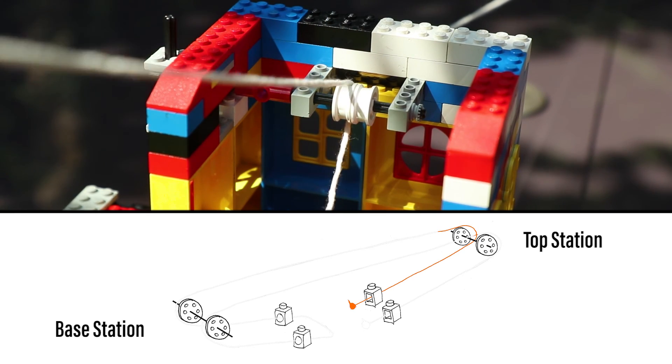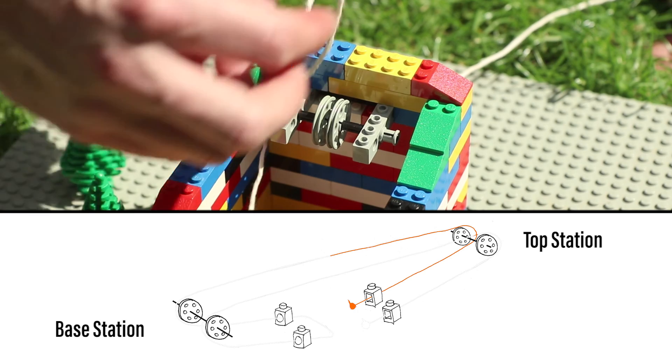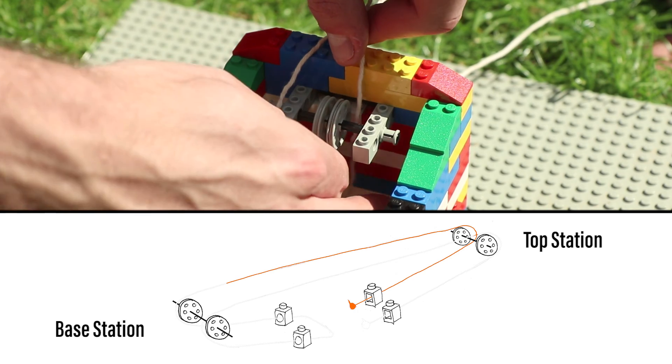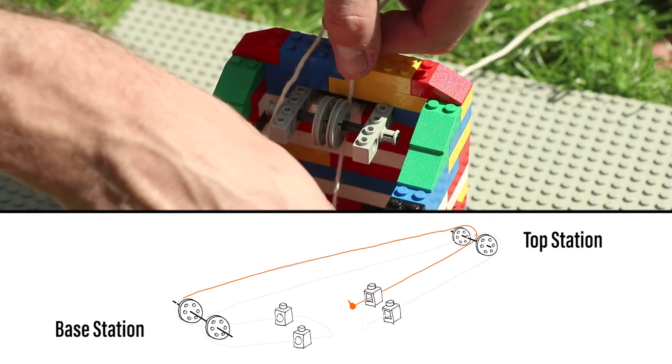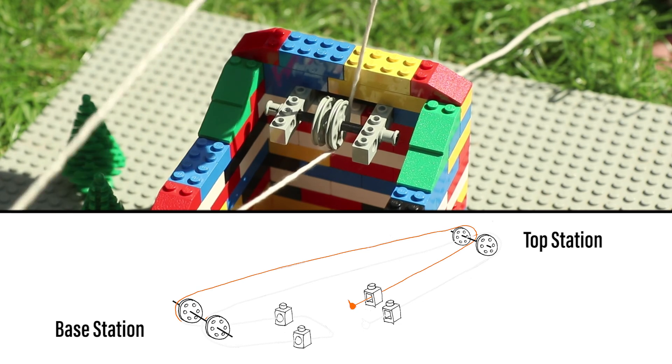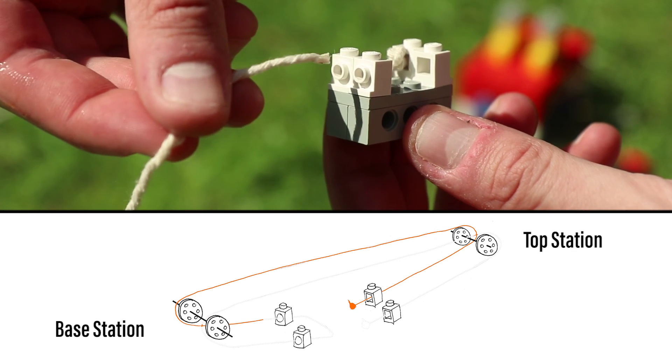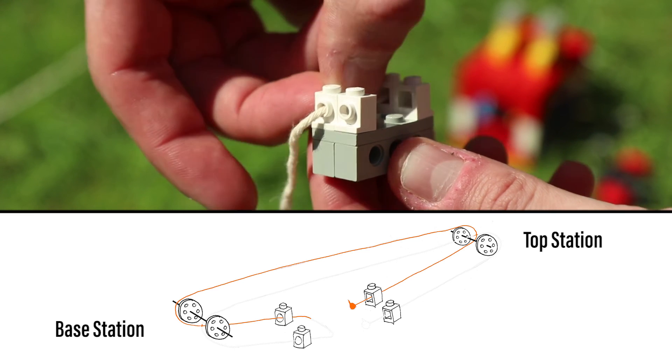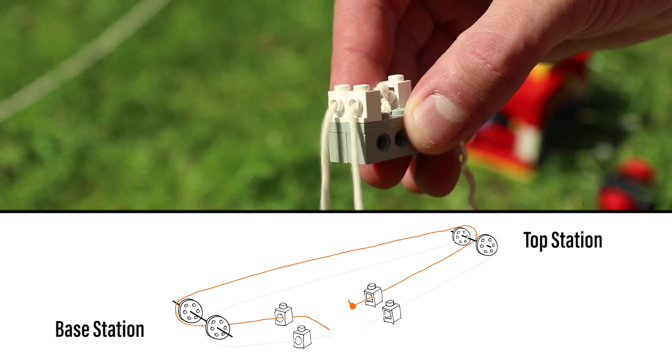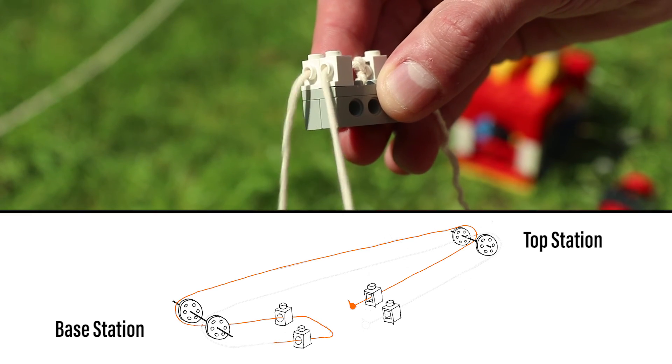Thread the string over the left wheel down to the base cable car station then thread it over the right hand wheel of the base station. Now run the string under the wheel back to the fixture which goes on top of your cable car. Thread the string through the bottom left knob brick and then back through the bottom right knob brick.